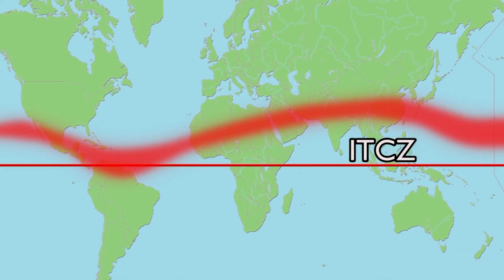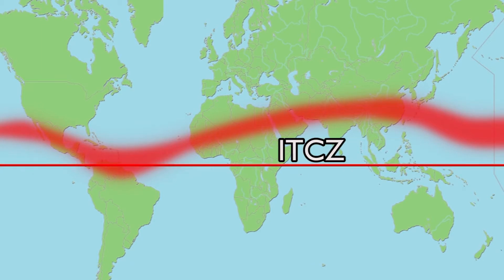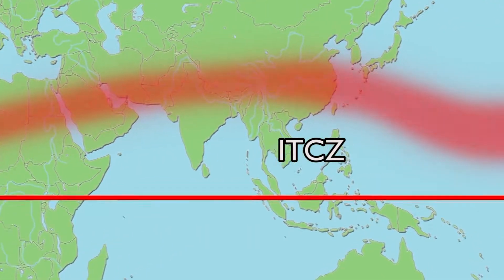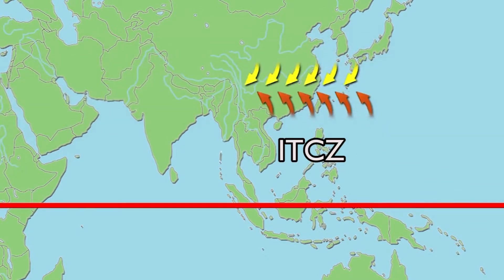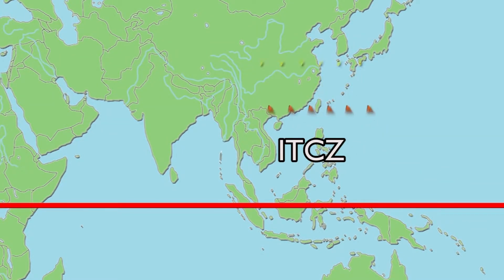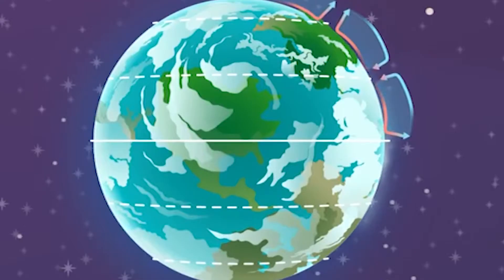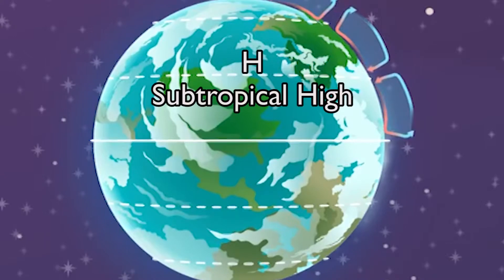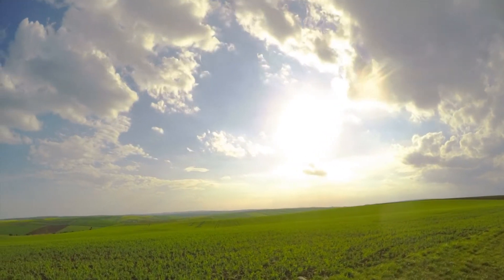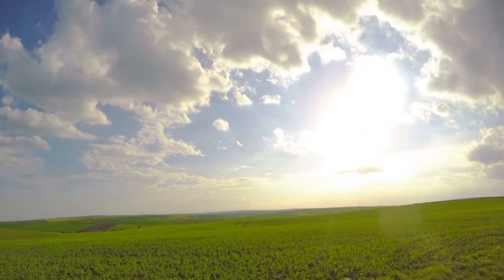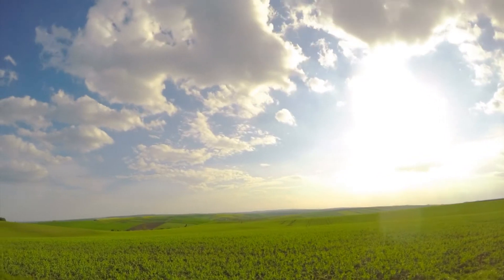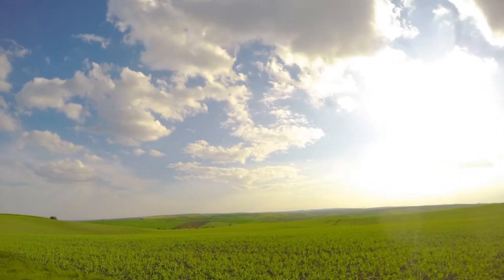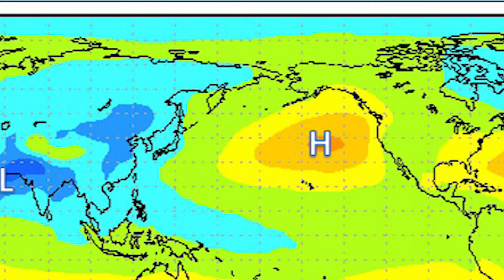Every time we refer to ITCZ, it stands for Inter-Tropical Convergence Zone. Sinking air near the 30-degree latitudes causes high pressure areas called the Sub-Tropical Highs. These highs produce clear skies and calm winds in a latitude band sometimes called the Horse Latitudes, which lie just north of the Hawaiian Islands and dominate Hawaiian weather.